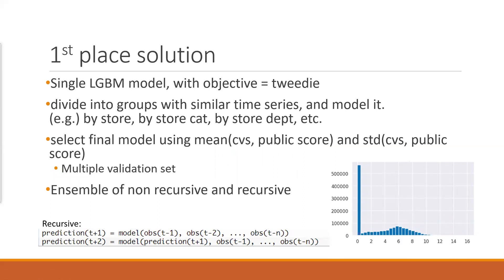So first, let's look at the first place solution. Again it's a single LGBM model. And the interesting part is the objective is tweedie. I haven't used this objective or loss function before. I specifically looked into this tweedie objective. It turns out that for the problem, if you have lots of zeros, and then you have this kind of distribution, then tweedie objective is a very good choice. You don't need to throw away the zeros because it's going to model zeros as well.